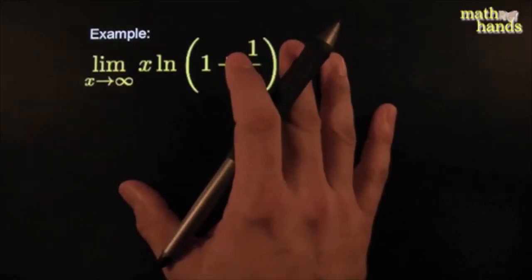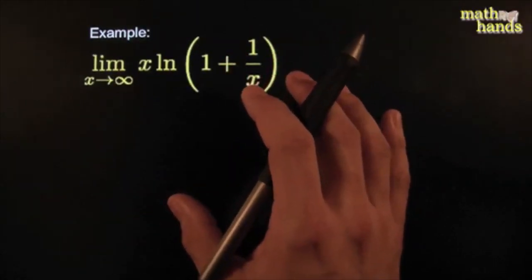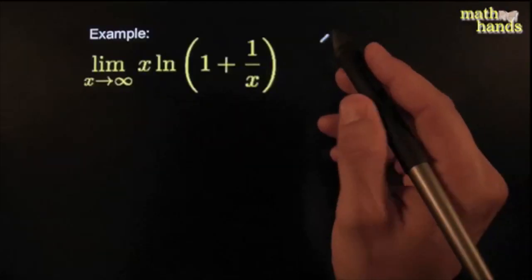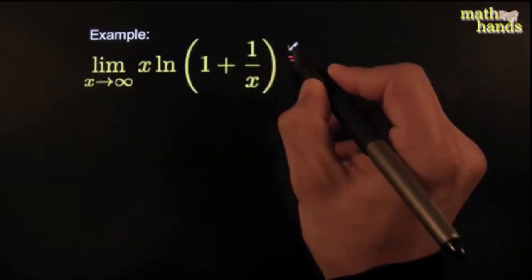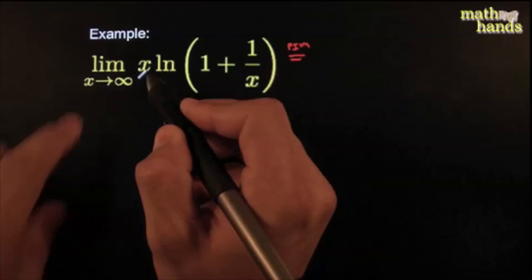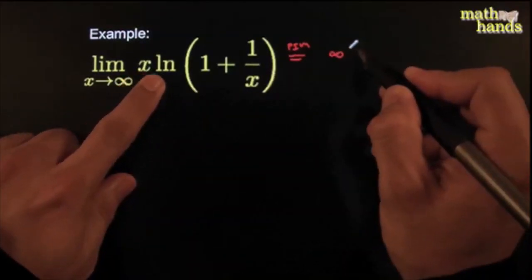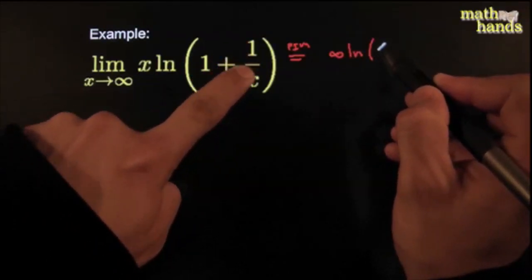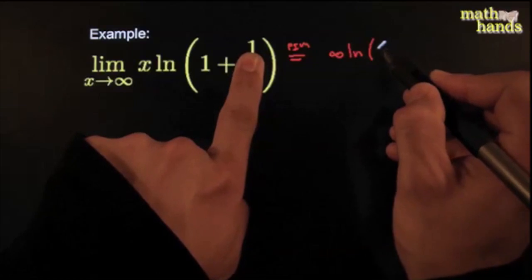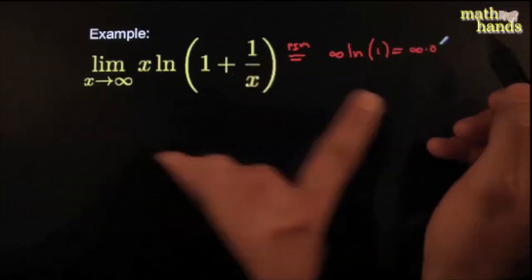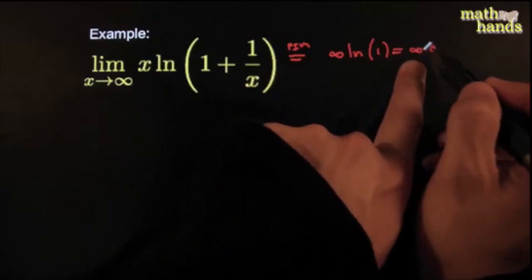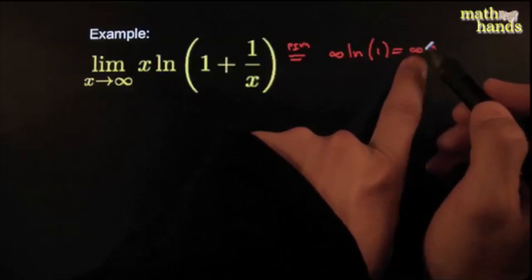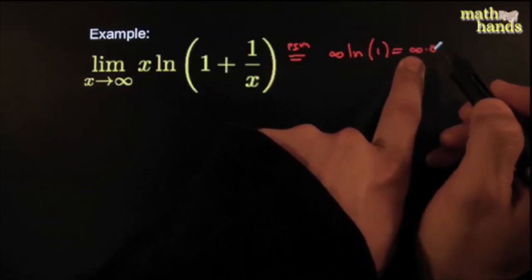Now it's time to take it up a notch, or two, or five notches. So this one — the first thing you do is you do the plug-in method. x is going towards infinity, so plugging it in: infinity times ln of 1 plus 1 over infinity. That's 1 over infinity is zero, so really it's ln of 1, which becomes infinity times zero. Uh-oh. That's an indeterminate form — something really large times something really small. Who knows? Depends on which. This is the vampire and the werewolf story. It's indeterminate.